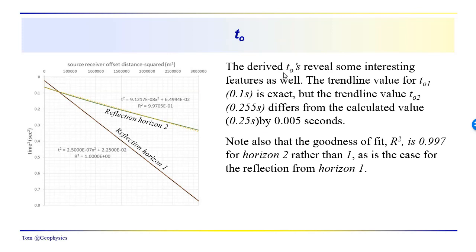Let's also take a look at the derived values of t₀ — they reveal some interesting features. The t₀s would be the square roots of these terms (t₀-squared). Taking the square root gives 0.1 seconds — that's exact. But the trend line value for t₀ of 0.255 seconds differs from the calculated value of 0.25 by 0.005 seconds — five milliseconds. It's a small amount, but it shows once again that this t-squared x-squared representation of the reflection from the base of layer 2 is not a perfectly straight line — the goodness of fit R-squared is 0.997, rather than 1 as it is for horizon 1.